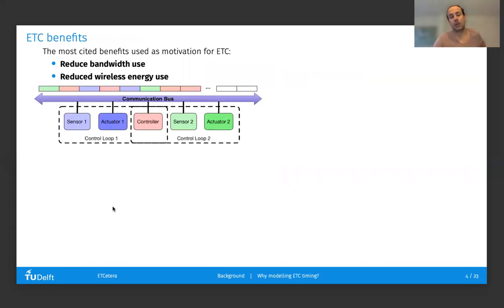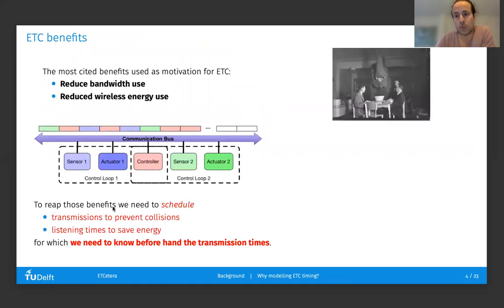Now, in the literature, the most commonly cited benefits of event-triggered control are that it can help reduce bandwidth usage and wireless energy usage in wireless communications. However, in practice, to reap such benefits, the relaxation of how often it transmits comes at the cost of not knowing when transmission times are beforehand, which hinders us from scheduling transmissions to prevent collisions in the channel or to limit the amount of time our radios are switched on listening for possible transmissions.